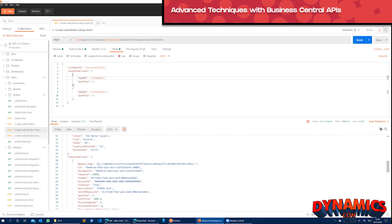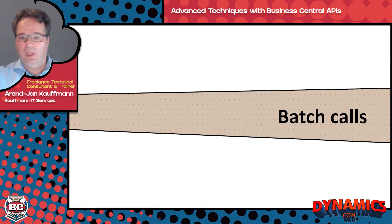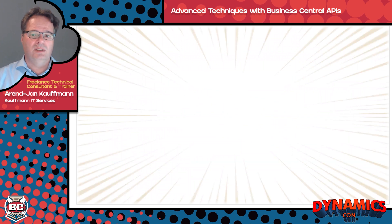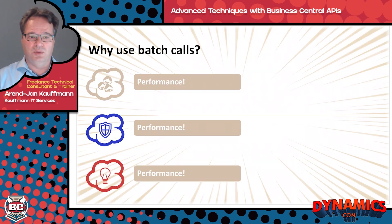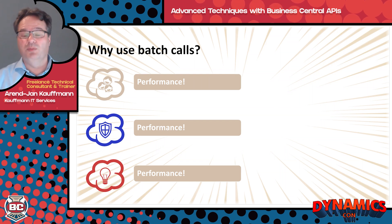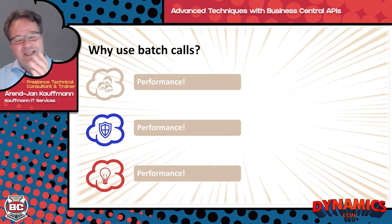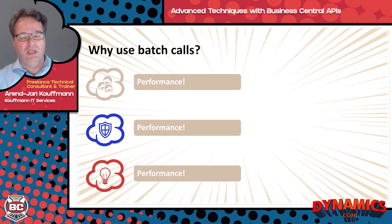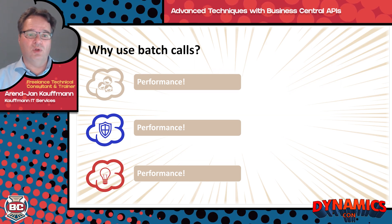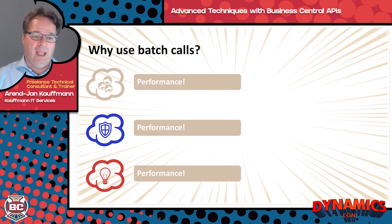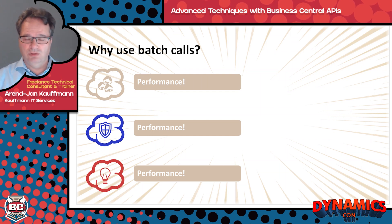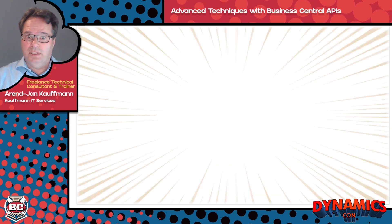Let's move on to the next topic: batch calls. Why do you need batch calls? I have only three reasons for that: performance, performance, and performance. What I mean is, this helps you combine multiple requests — do one request, send it to the server, and have only one round trip. Let the server perform multiple requests and then return you the results. In that way, you save yourself a number of round trips to the server, which obviously helps with performance.